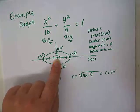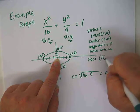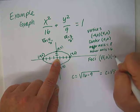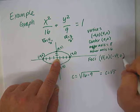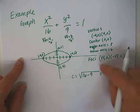So c is the square root of 7. And since the center is at 0, 0, that's pretty easy, because that means that the foci would be located at square root of 7, 0 and negative square root of 7, 0. And there's the foci.